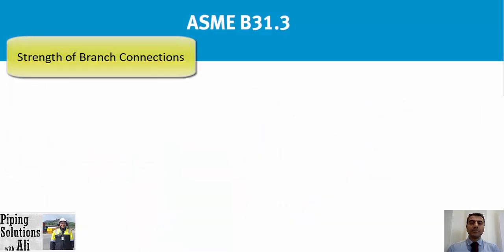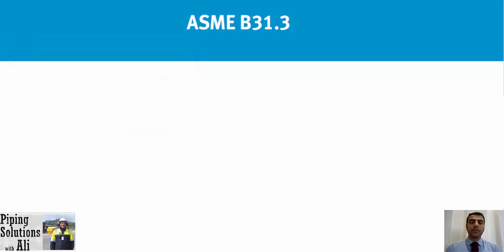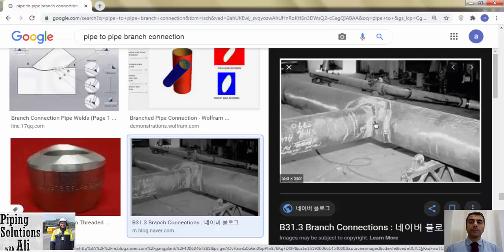Pressure design of an unlisted branch connection fitting is not the subject of this course. Clause C covers the branch connection that utilizes an unlisted branch connection fitting per paragraph 300.2, provided the fitting is made from materials listed in Table A-1 or Table A-1M and the branch connection is qualified as required by paragraph 304.7.2.